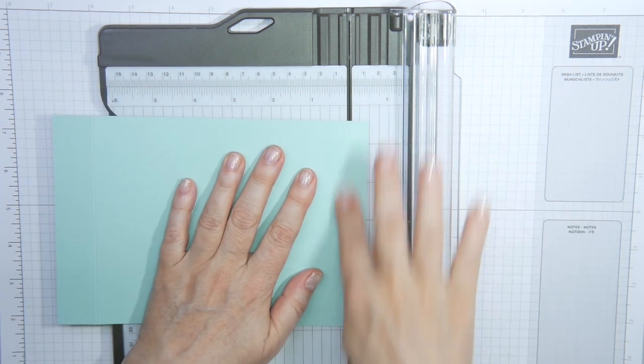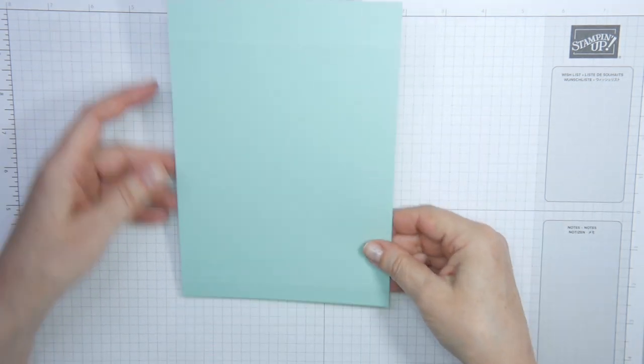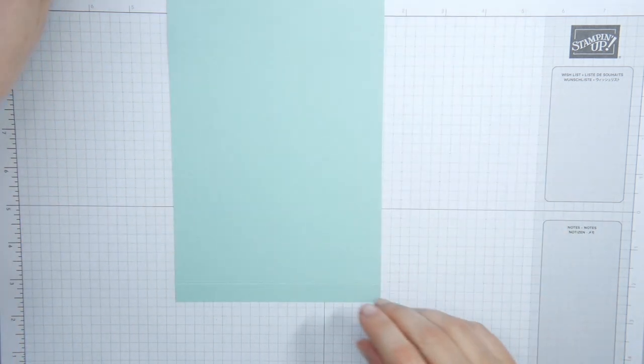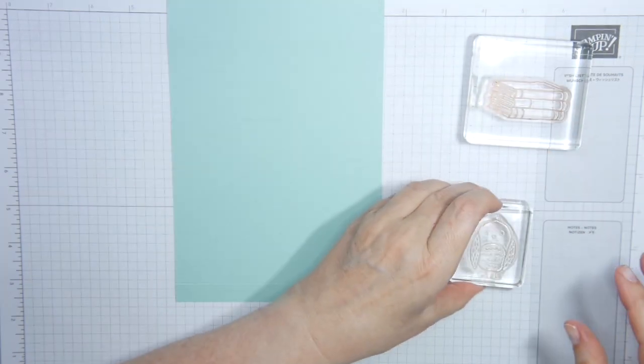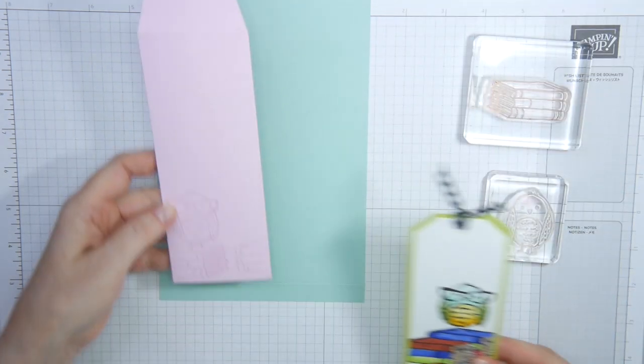This is a half inch flap. So 1.2 centimeters roughly. Because I'm going to use this as a guide for some stamping. I'm going to stamp the stack of books and the bird on the envelope.